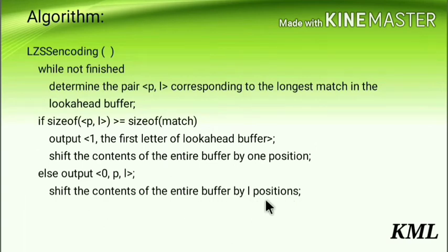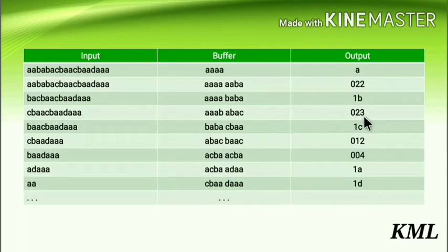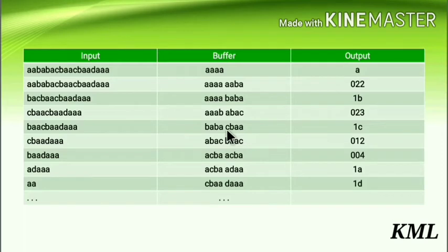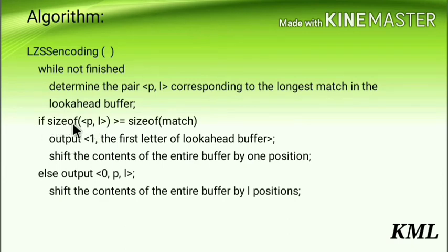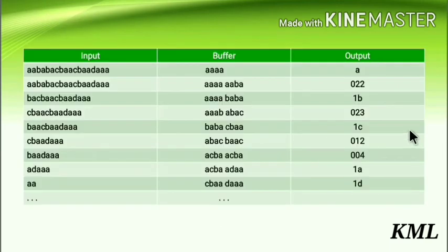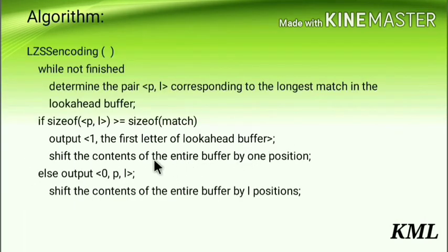Shift the buffer by L=3 positions. Three characters go out, you are remaining with BABA, take that to the left buffer, C goes to the right buffer, and fill the empty spaces with the next three input letters: BAA. Start matching again — you have AC in the look-ahead; no match in the dictionary, length = 0. Multiply by 3 to get 0. Condition 4 >= 0 is true, so output 1 and first letter C.